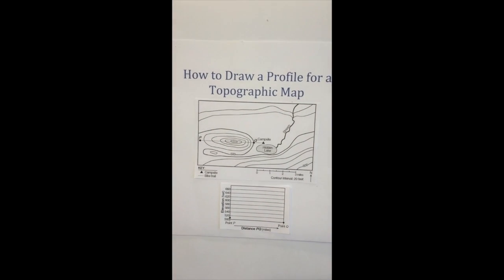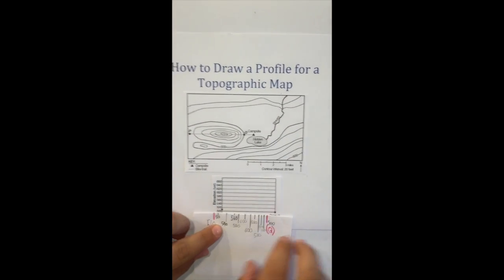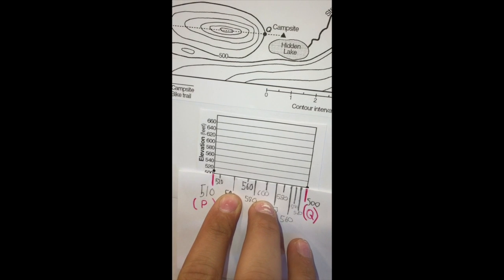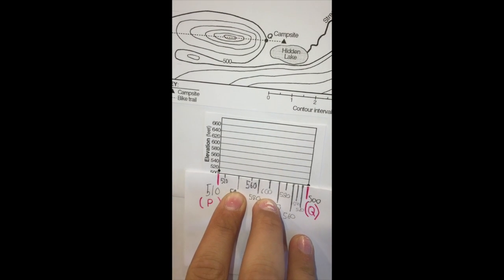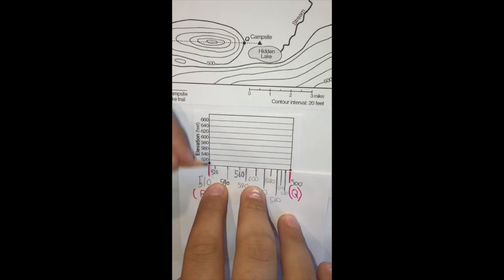Now, put this scrap paper and line it up with the x-axis on the grid. Now, you are going to plot each point directly above the marking from the scrap paper at the correct elevation.